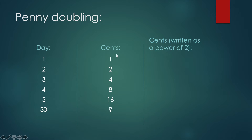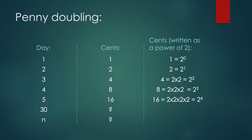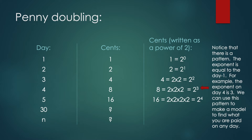What I'm noticing is that these numbers can be rewritten as powers of 2. For example, 1 can be rewritten as 2 to the 0 power, 2 as 2 to the 1st power, 4 as 2 to the 2nd power, 8 as 2 to the 3rd power. Another pattern: the exponent is simply the day number minus 1. So on day 4, the exponent is 3. For any nth day, the exponent will be n minus 1, giving 2 to the (n-1).